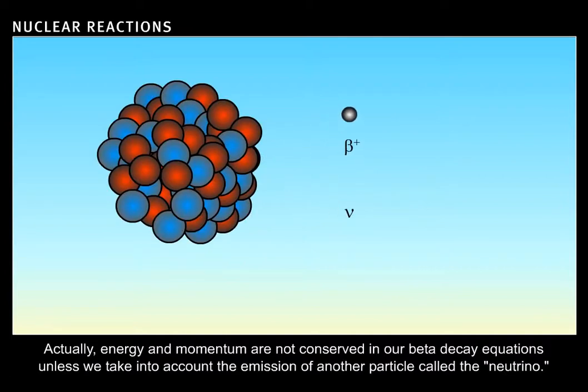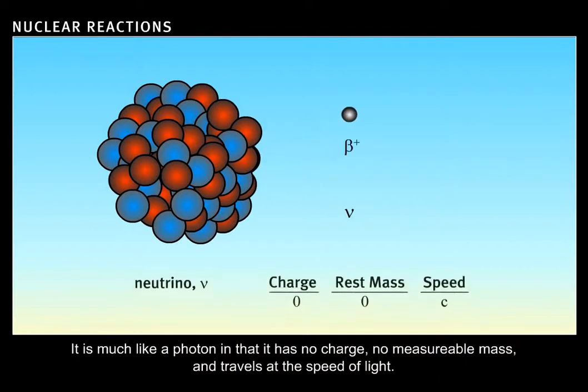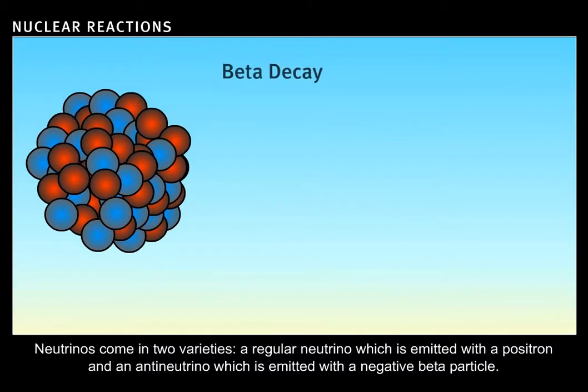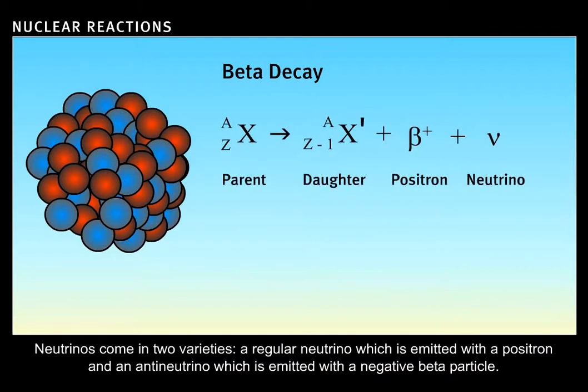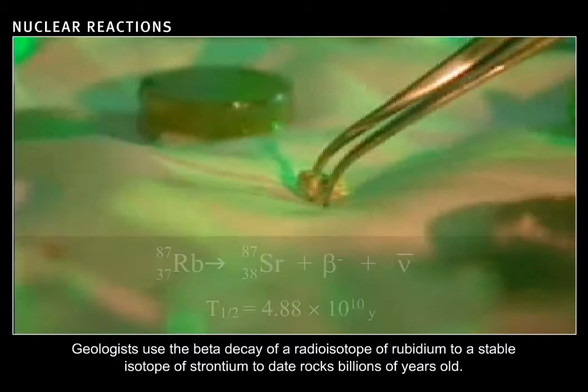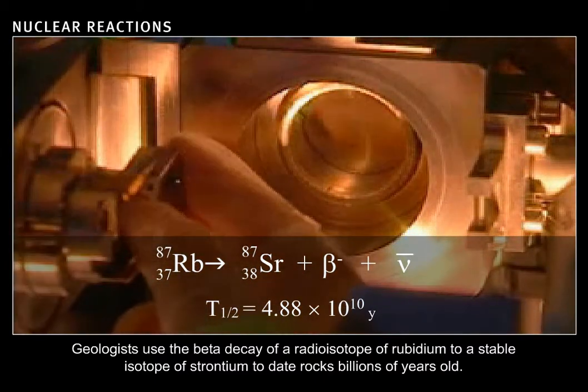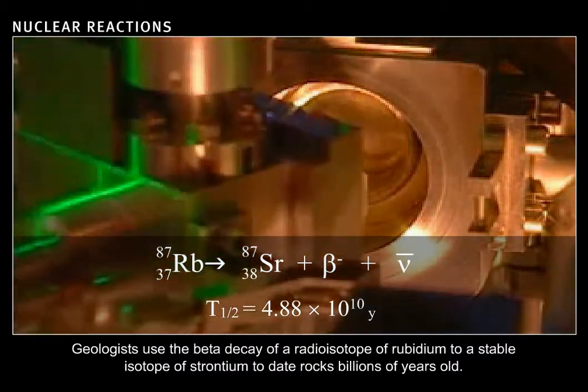Actually, energy and momentum are not conserved in our beta decay equations unless we take into account the emission of another particle called the neutrino. It is much like a photon in that it has no charge, no measurable mass, and travels at the speed of light. Neutrinos came in two varieties, a regular neutrino, which is emitted with a positron, and an antineutrino, which is emitted with a negative beta particle. Geologists use the beta decay of a radioisotope of rubidium to a stable isotope of strontium to date rocks billions of years old.